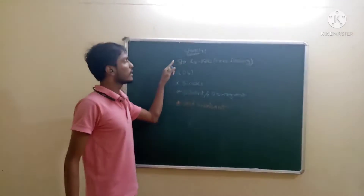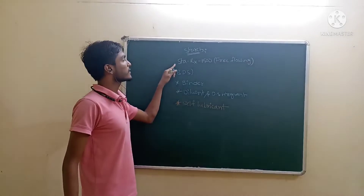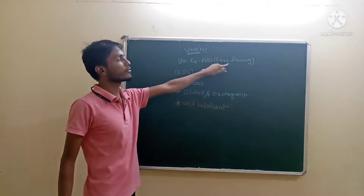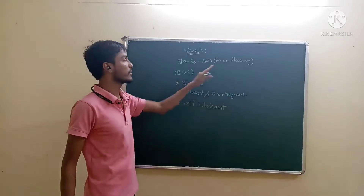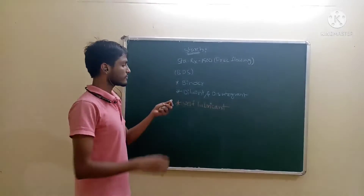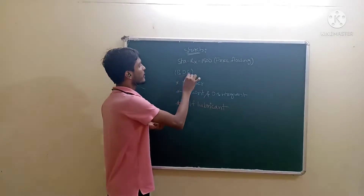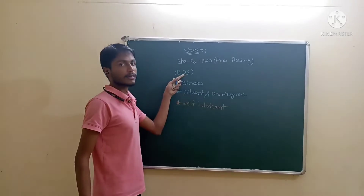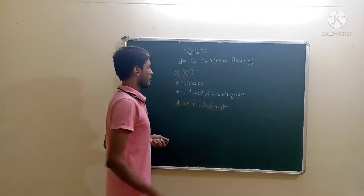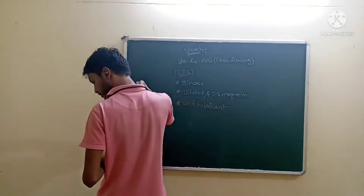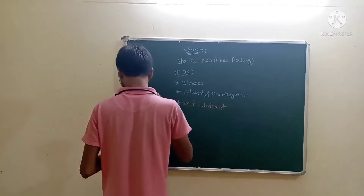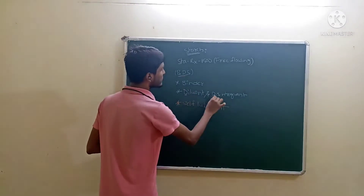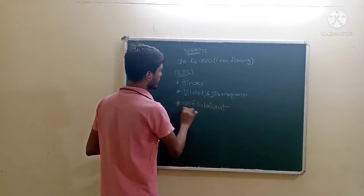We are discussing starch RX 1500, which has free-flowing properties. The mnemonic is BDS, which stands for binder, disintegrant, diluent. It is also a self-lubricant, diluent, and disintegrant.